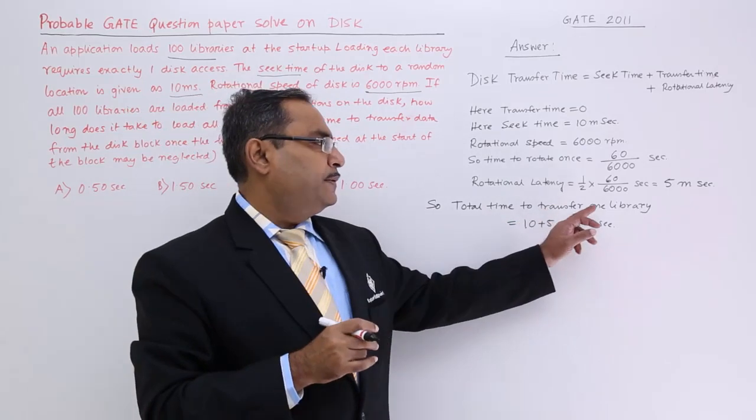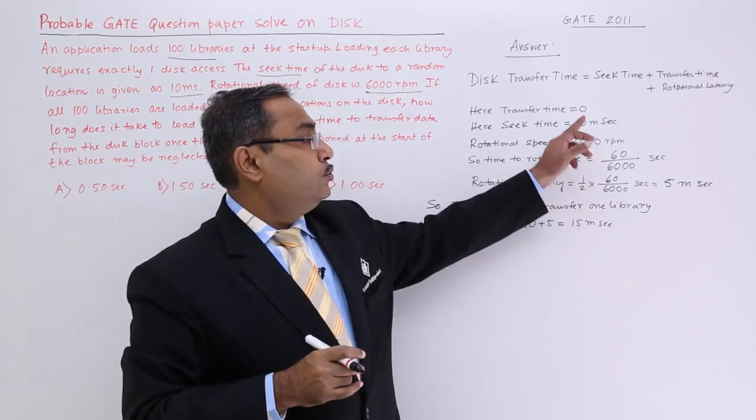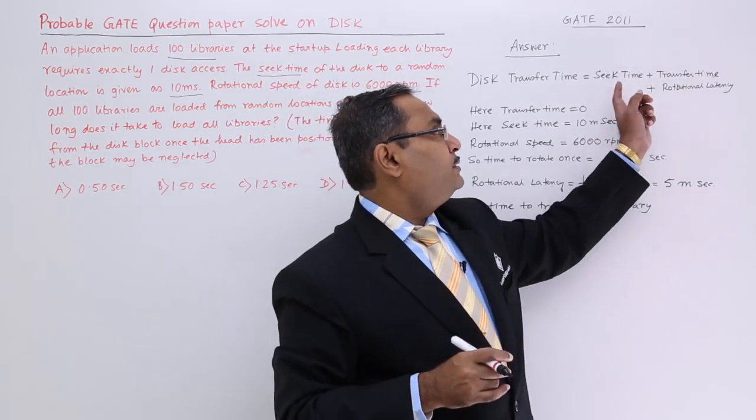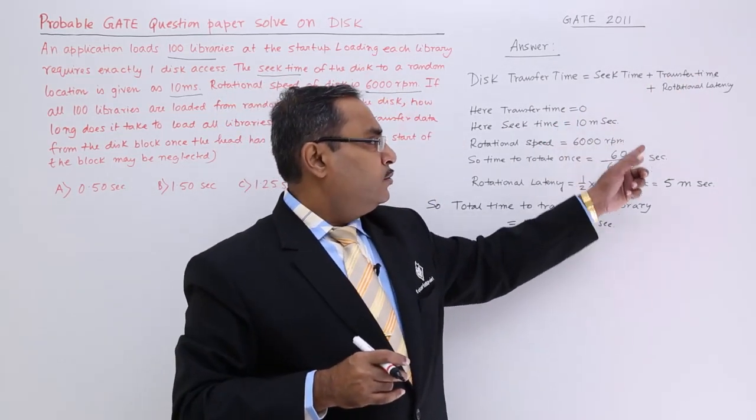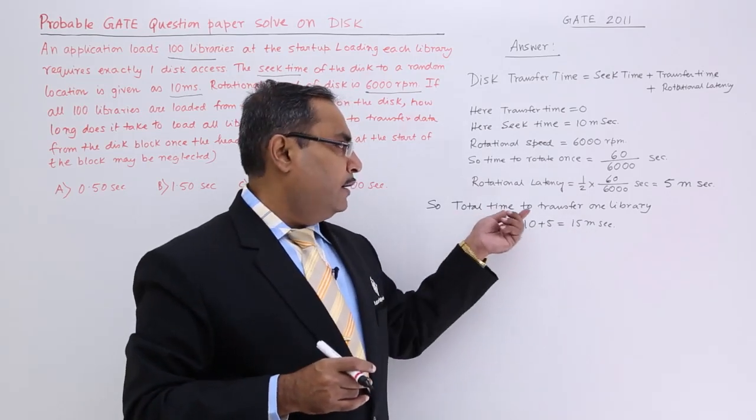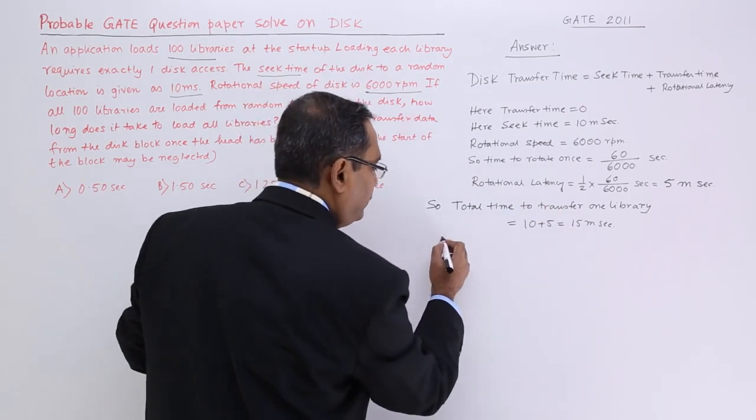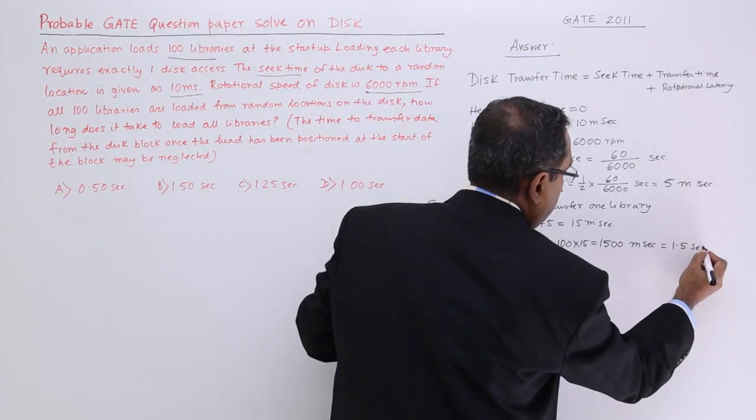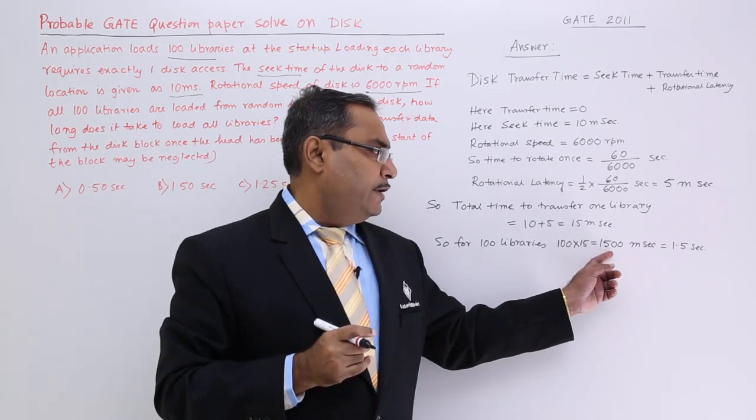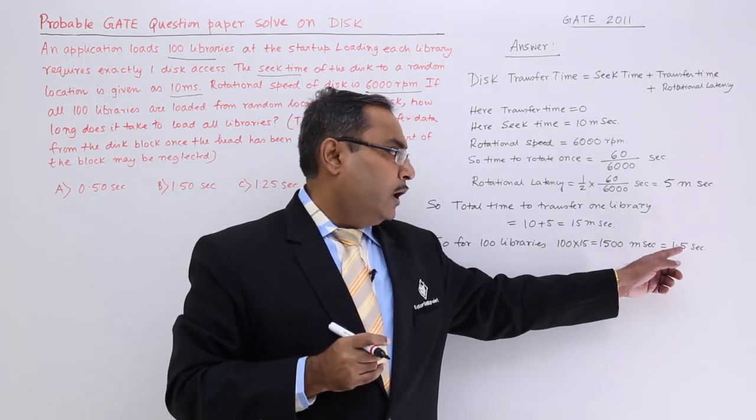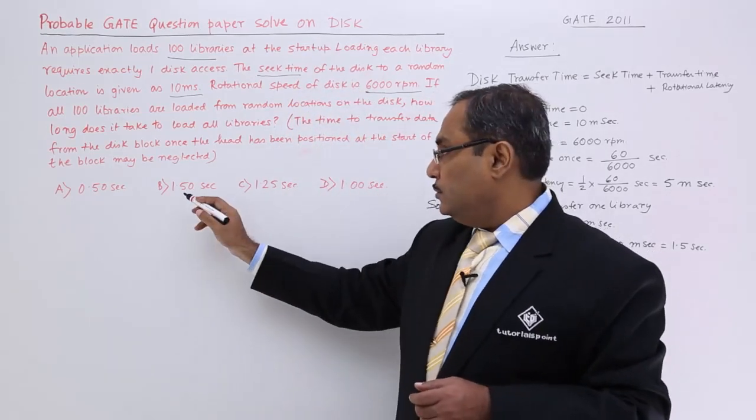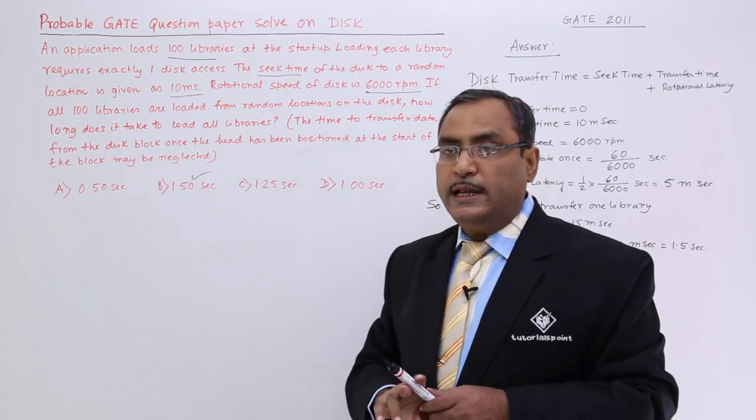Total time to transfer one library is equal to this plus this plus that. Here the transfer time is 0, seek time I have calculated and rotational latency I have calculated. Now it is 10 millisecond plus 5 millisecond, so it is 15 millisecond for the 1 library. So it is 100 into 15 is equal to 1500 millisecond is equal to 1.5 second. That is the total time required. Let me check, 1.5 second is this one. So B will be the answer.